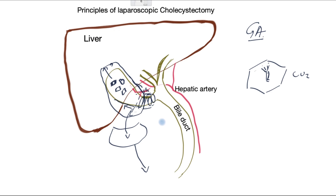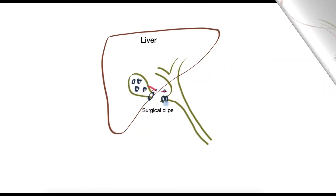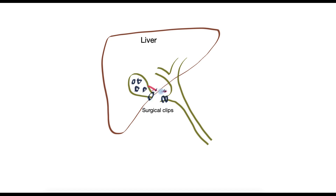To provide further clarity, in this picture you can see the surgical clips applied to the cystic duct and on the artery. The cystic duct — the tube that connected the gallbladder to the bile duct — has been divided, and the artery has also been divided.